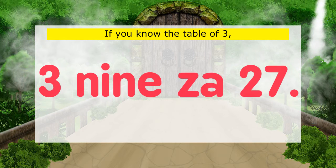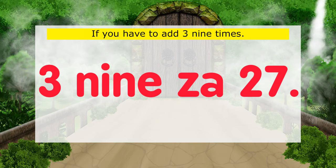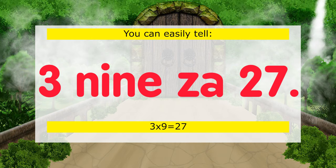If you know the table of 3, you don't need to add up 3 repeatedly. If you have to add 3 nine times, you can easily tell: 3 nines are 27. 3x9 equals 27.